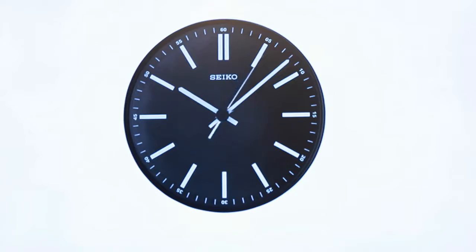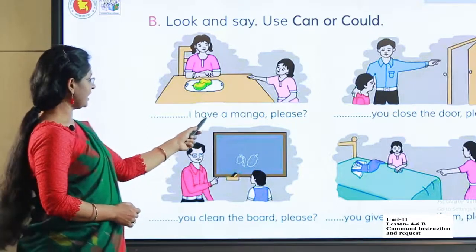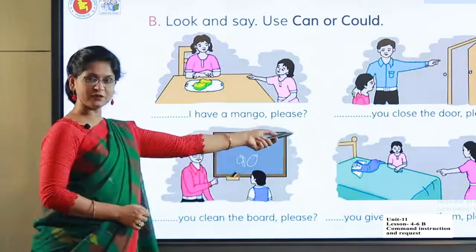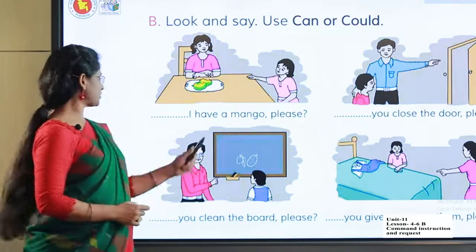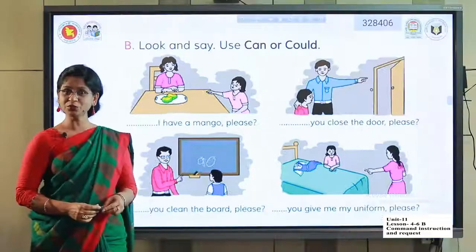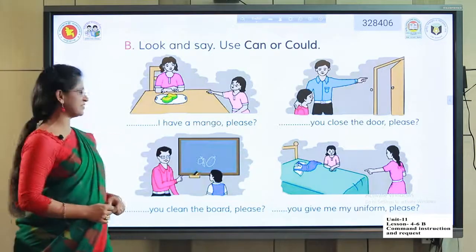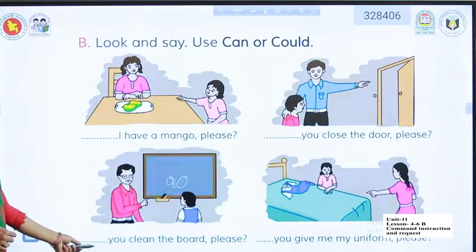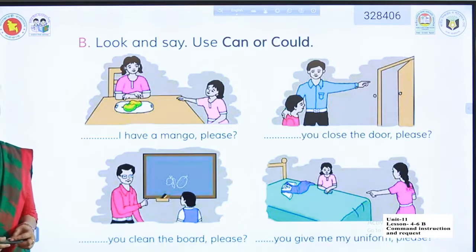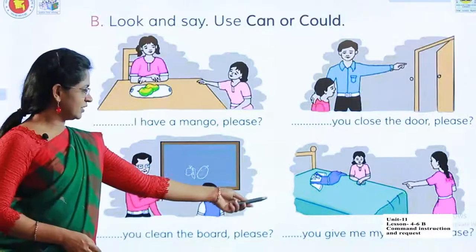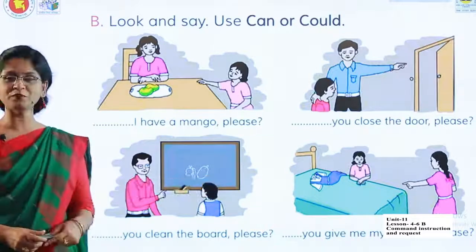Let's get started. Please look carefully at the sentences. 'I have a mango please' — what should I use? Yes, could I. So you have to put 'could' here. 'You close the door' — what will you use? Can you. Very good. Can you close the door please? 'You clean the board please' — I have to use 'can'. Can you clean the board please? 'You give me my uniform please' — Can you give me my uniform please? Very good.